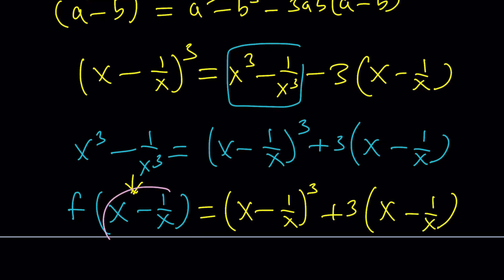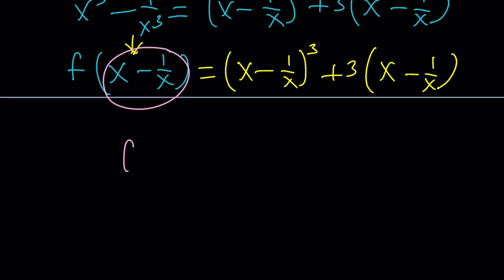If you just replace this with something like t or z or whatever, then, you're going to get something like this. Let's use t again. f of t equals t cubed, because this is t and that's t, plus 3t. And that's just awesome.